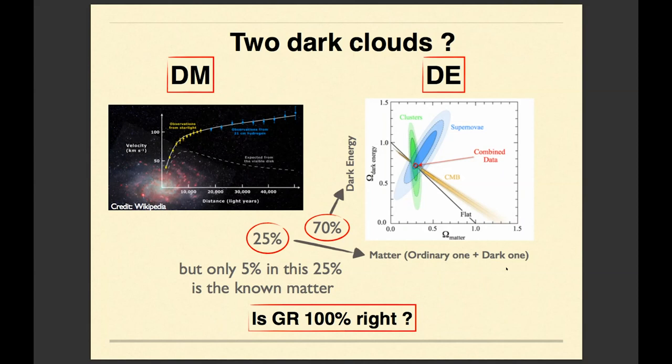And another dark cloud is the fact that in the end of nineties, the accelerated expansion of the universe was discovered. And again, the only way to explain this accelerated expansion within general relativity is to admit that our universe consists of not only matter, but also some unclear unknown new type of energy, which is called dark energy.